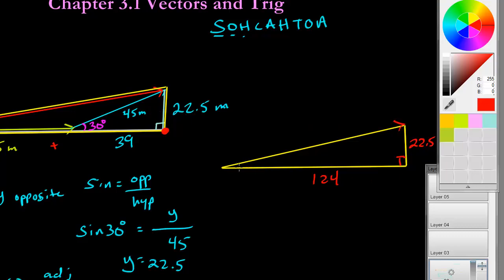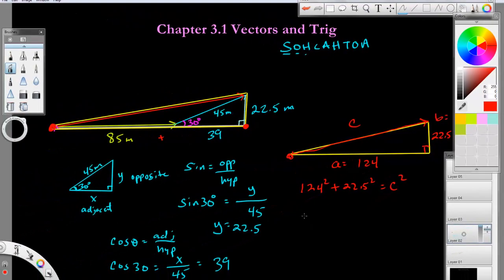What we want is the hypotenuse. That's our goal here, to find this red line. To do that, you can do Pythagorean theorem. This would be C, we can call this A and this B. So we can say that 124 squared plus 22.5 squared equals C squared. This is the Pythagorean theorem: A squared plus B squared is C squared. This stuff is ancient mathematics.